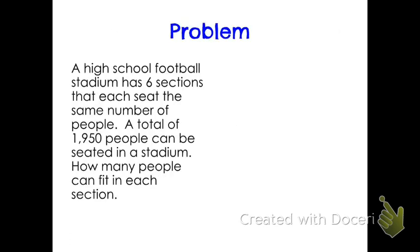The problem we're going to look at says: a high school football stadium has six sections that each seat the same number of people. A total of one thousand nine hundred and fifty people can be seated at the stadium. How many people can fit into each section? We know that there's going to be an equal number.